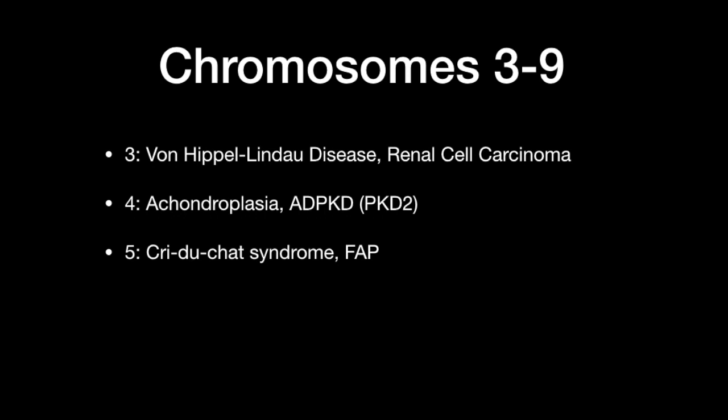On chromosome five you have two disorders: Cri-du-chat syndrome and familial adenomatous polyposis. The fifth person in the car is a cat — in Cri-du-chat syndrome, a high-pitched crying or meowing is typically presented, so the cat helps you remember it. Familial adenomatous polyposis also appears on chromosome five because in this family you have five members. It's important to note that other familial diseases like familial hypertriglyceridemia or familial hypercholesterolemia are not on chromosome five.